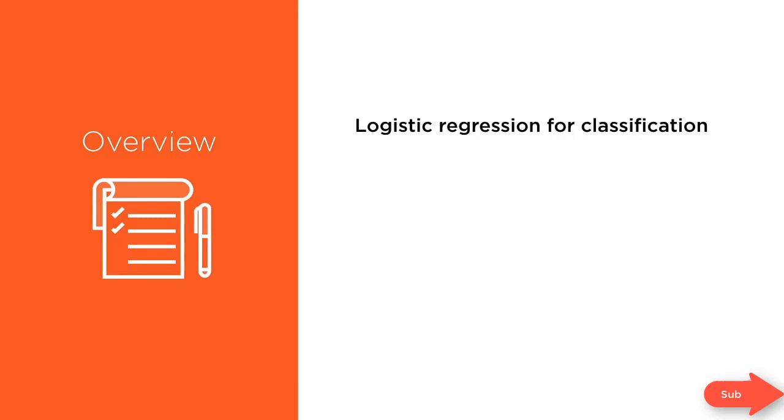The simplest possible classifier and the first one that you'll encounter when you study machine learning is the logistic regression classifier. Don't be confused by the name, it's actually a classification model.